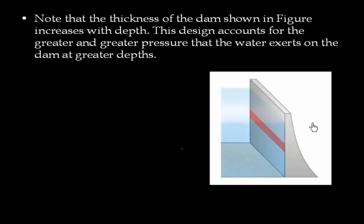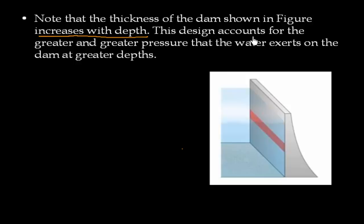Let us discuss more about the same problem. One design aspect is that the thickness of the dam wall in the figure increases with depth — at the top the thickness is less, but at the bottom we have higher thickness. This design accounts for the greater and greater pressure that water exerts on the dam at greater depth.